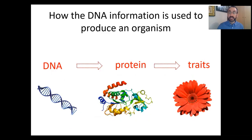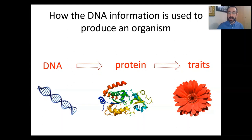The big takeaway from this lesson is that DNA codes for proteins and proteins determine traits. DNA is the code for proteins, and proteins determine the traits. Today we're going to learn how that works. In a moment I'm going to show you a video of a colleague's daughter, Zoe, using beads to figure out how DNA codes for proteins. Watch this video.